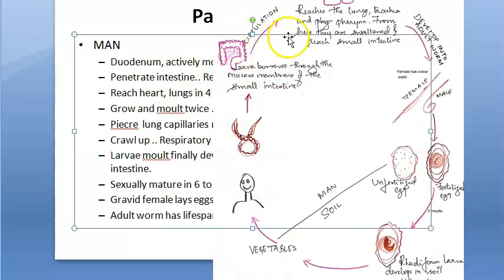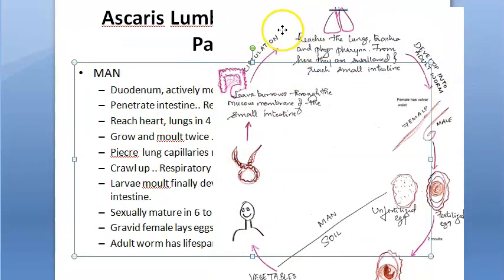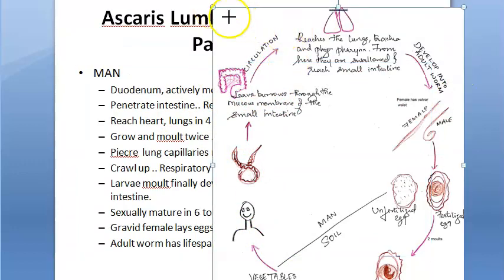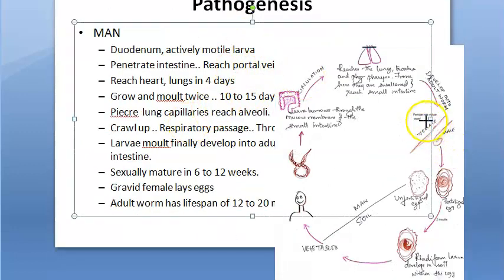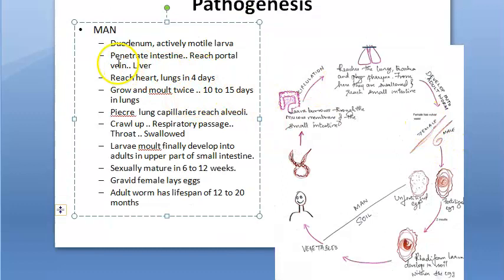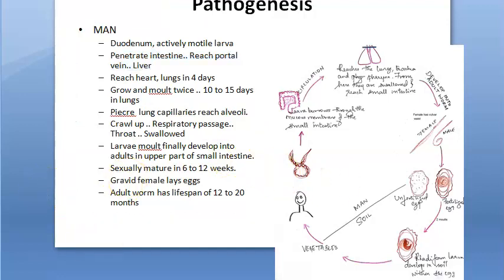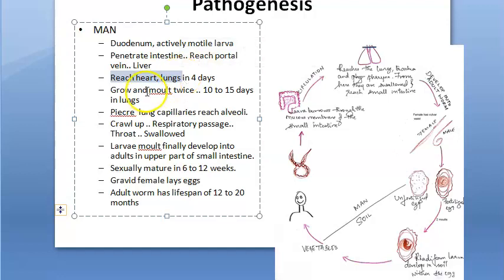The larva is very motile. It penetrates the intestine and it reaches the portal vein, and it reaches the liver. So from the small intestine, it has reached the liver. From there, through the blood supply, it will reach the heart, and from the heart it will reach the lungs — in four days, it will reach the lungs.